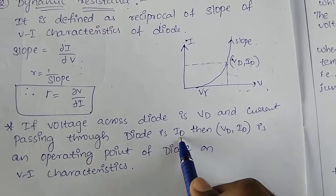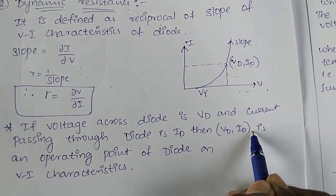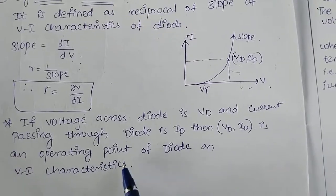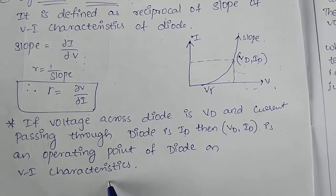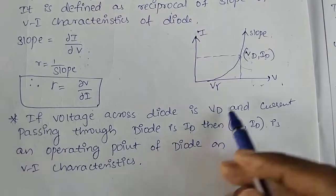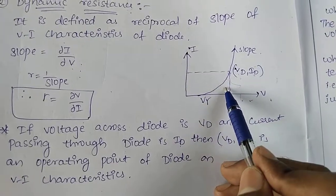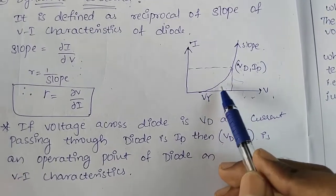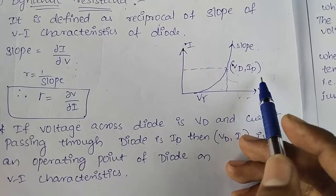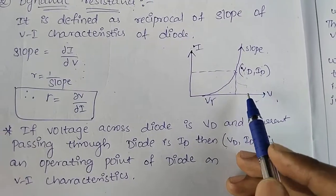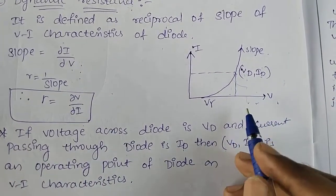If the voltage across the diode is VD and the current passing through the diode is ID, then VD comma ID is the operating point of the diode on the V-I characteristics.